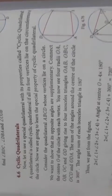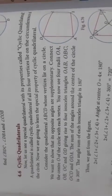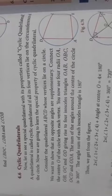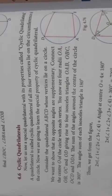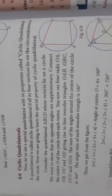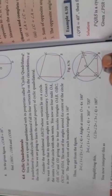Hello students, today we are going to see cyclic quadrilaterals. What is a cyclic quadrilateral? Before we discuss any about quadrilaterals, a quadrilateral is nothing but a figure constructed by four straight lines — a closed figure. That is the quadrilateral.